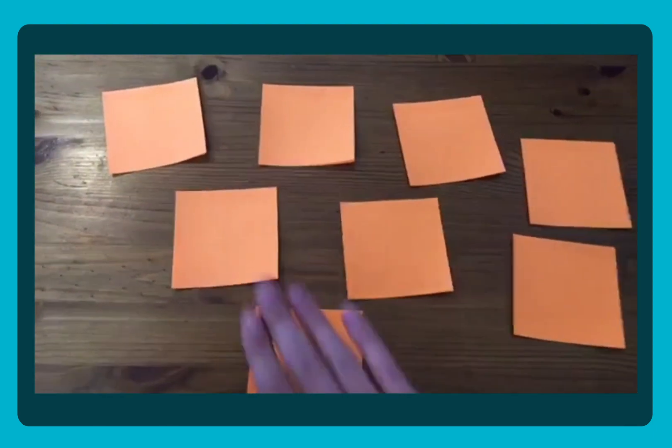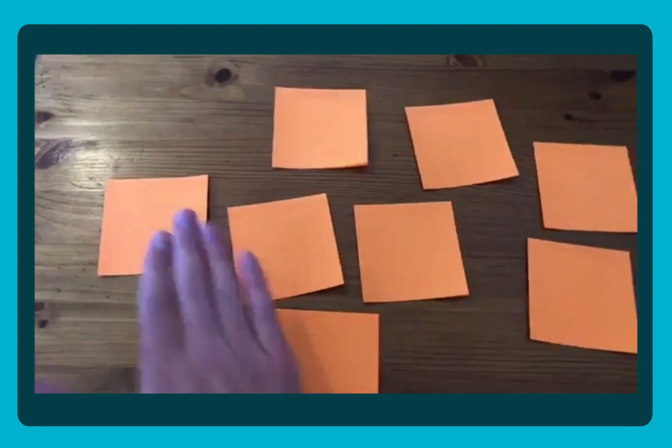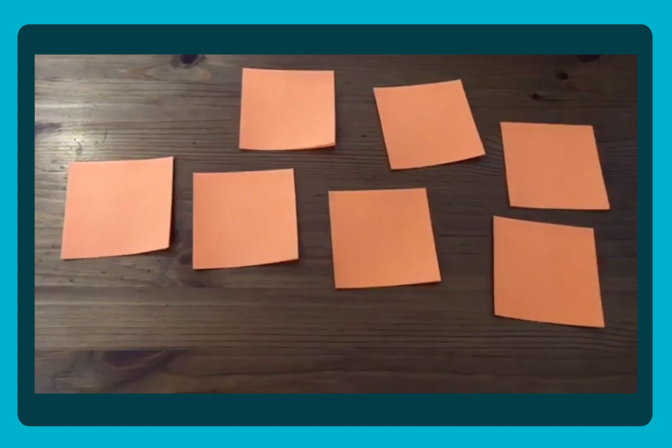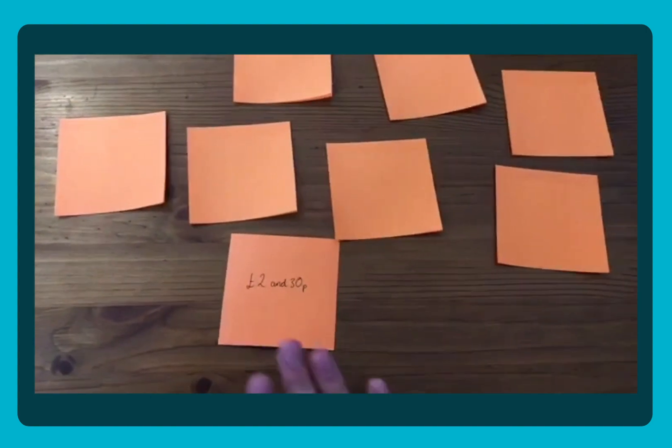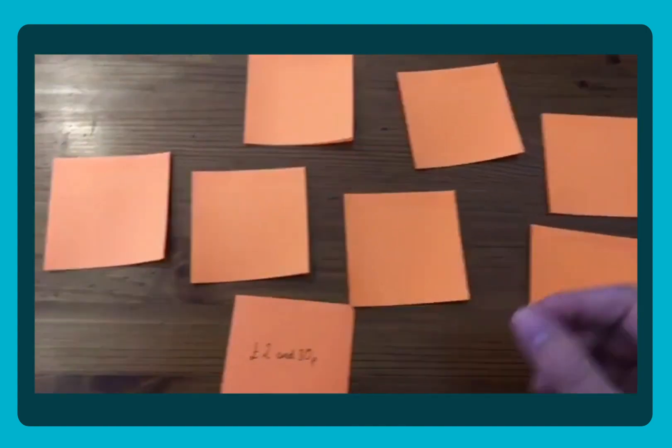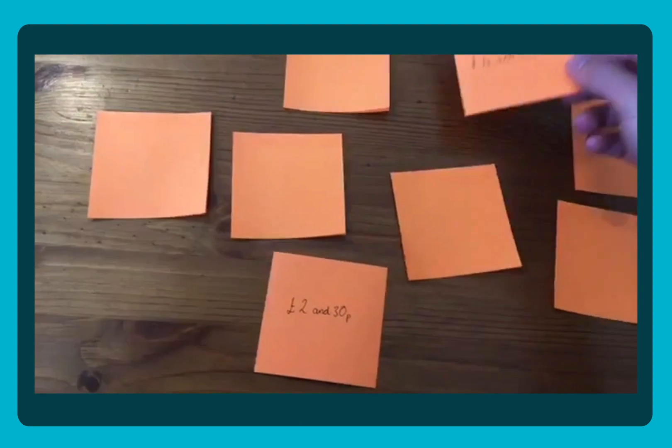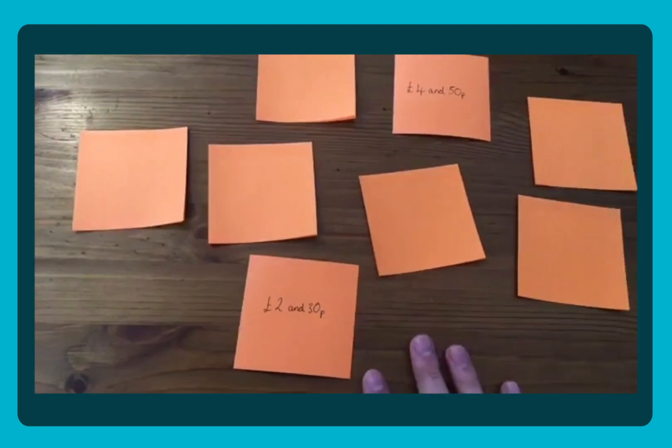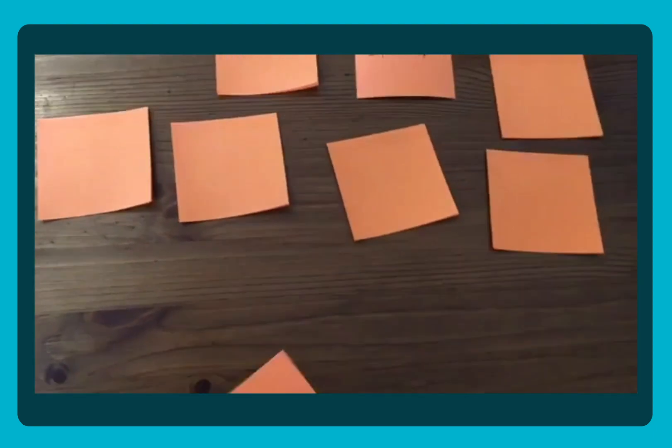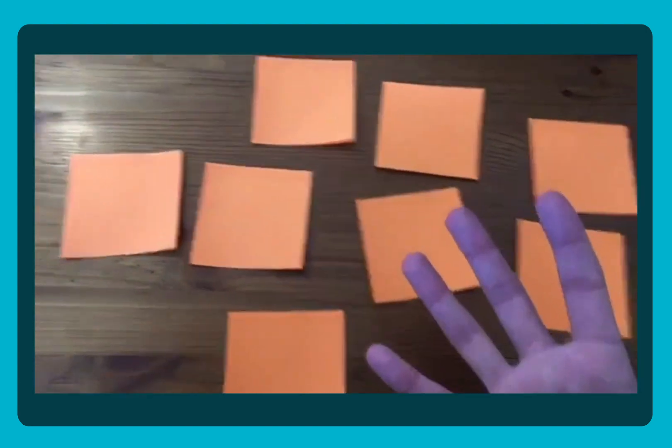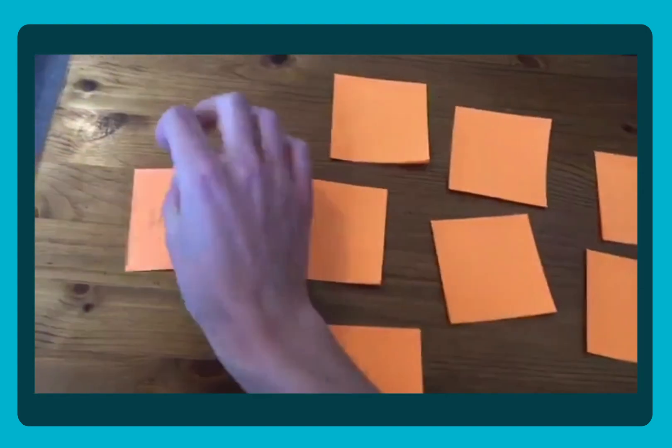Once you've given them a good mix, this can be played in single player or you could use pairs if they're siblings and you just take it in turns to turn one card over. So I've got £2.30 there and you're trying to find that linked amount. So we know we're looking for pence. I'm looking for £2.30. Now the cards don't match, so they just turn over. If you don't match, they just get turned over and stay in the pack.